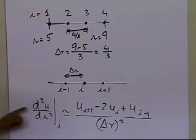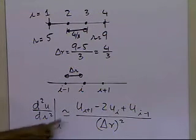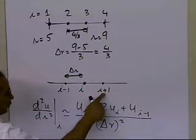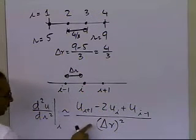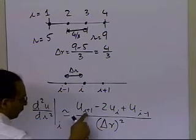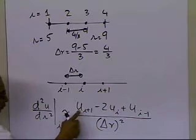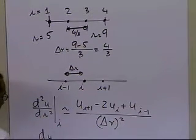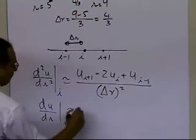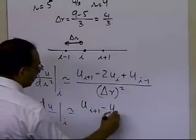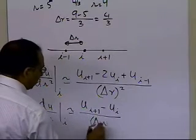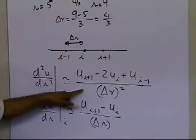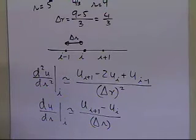What that means is that to approximate the second derivative of u with respect to r at node i, I use the displacement at node i plus 1, minus 2 times the displacement at node i, plus the displacement at node i minus 1, divided by delta r squared. You are replacing your derivatives by the values of u at specific points. Similarly, du by dr at node i can be approximated as u sub i plus 1 minus u sub i, divided by delta r. This is the forward divided difference approximation for the first derivative, while the previous one was the central divided difference for the second derivative.